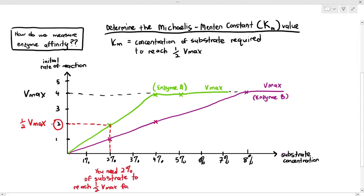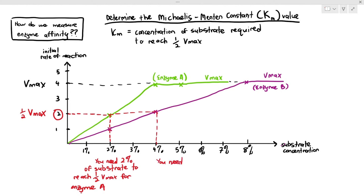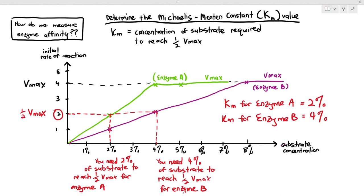The substrate concentration required to reach half Vmax for enzyme A is 2%, meaning you only needed 2% of the substrates for 50% of the enzymes to be fully occupied in the reaction. For enzyme B, the Vmax value is also 4 and half Vmax is 2, but the Km value is 4% — meaning you needed 4% substrate to reach half Vmax for enzyme B. So the Km value for enzyme A is 2% and for enzyme B is 4%. You needed a low amount of substrates to occupy 50% of enzymes for enzyme A, but a higher concentration for 50% enzyme saturation for enzyme B.